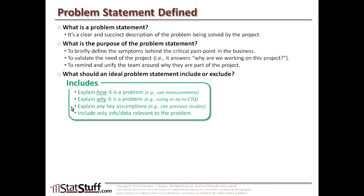We also want to explain any key assumptions that might be made within the project or in defining the problem statement. If there's a benchmark or previous study being used to explain why we think it's a problem, state it as such. However, general assumptions should not be stated in the problem statement. If anything critical helps define part of why we think it's a problem, identify it — and if it is an assumption, make sure we identify it as that. Finally, include any relevant information around the problem, only what's critical for context around the pain point.